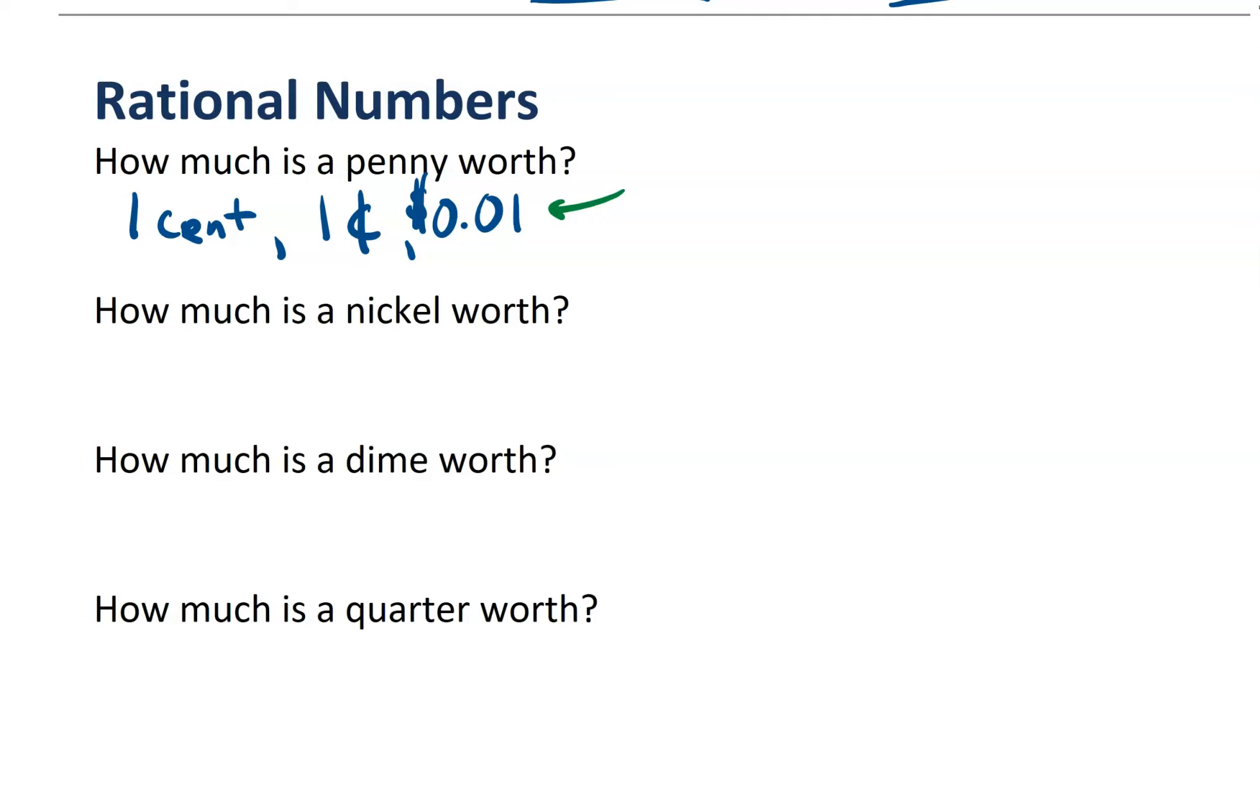Another way to write 0.01 dollars is to write it like this, one one-hundredth of a dollar. And so we can write this decimal as a fraction. Now when it comes to money, that's usually not what we do, but it is important to note that both of these represent the same thing. Now if we use this terminology in another example, we might say that a nickel is worth 0.05 dollars, or we might say that it's worth five one-hundredths of a dollar.